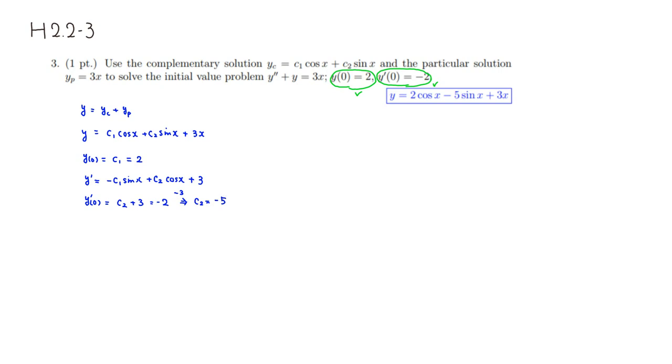Then what you can do is put 2 for c1, and put negative 5 for c2. So therefore, y solution of the initial value problem would be 2 cosine of x minus 5 sine of x plus 3x. So that's what we have here. That's it. I hope that this was clear.